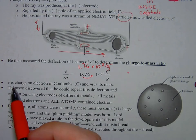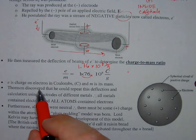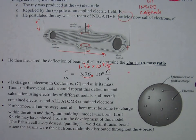So the electron - or E is the charge on the electron in coulombs. M is its mass. Thomson discovered that he could repeat this deflection and calculation using electrodes of different metals, that all metals contained electrons and all atoms contained electrons.